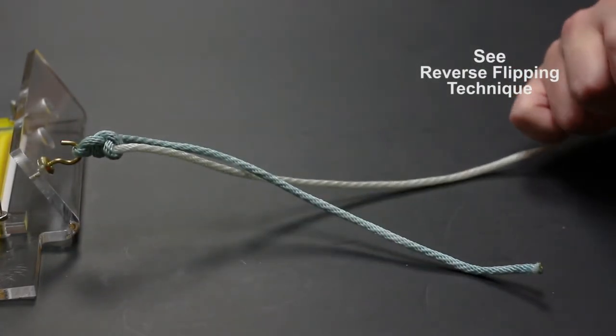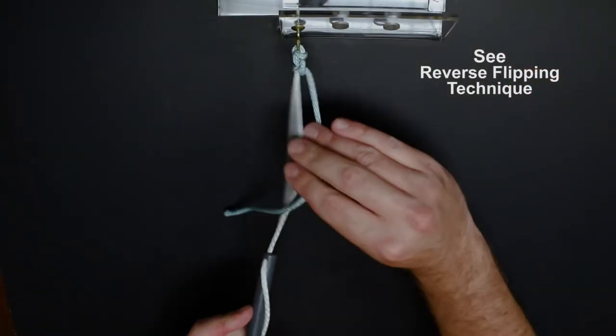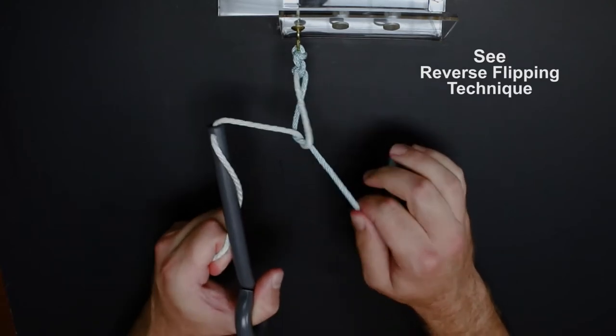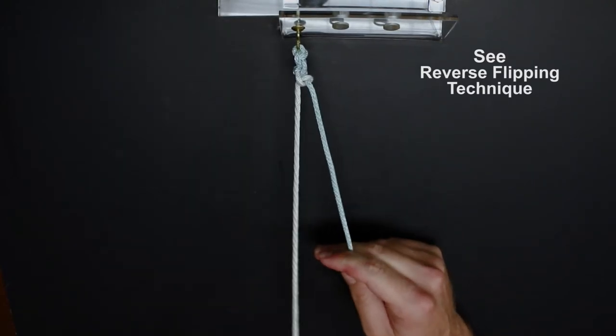Please see our video titled reversing half hitches on alternating post in order to learn how to keep the knot pusher on the same limb.